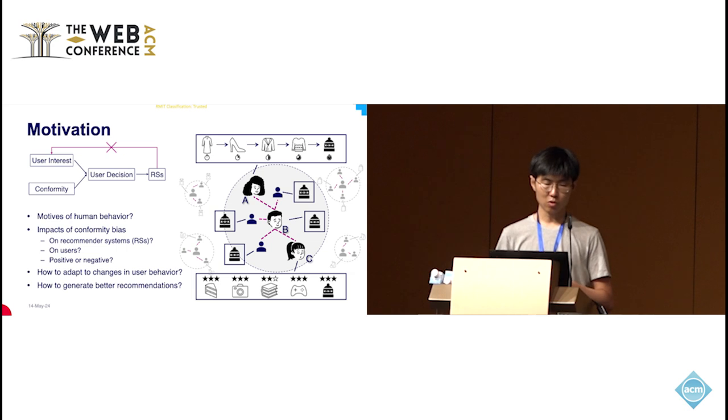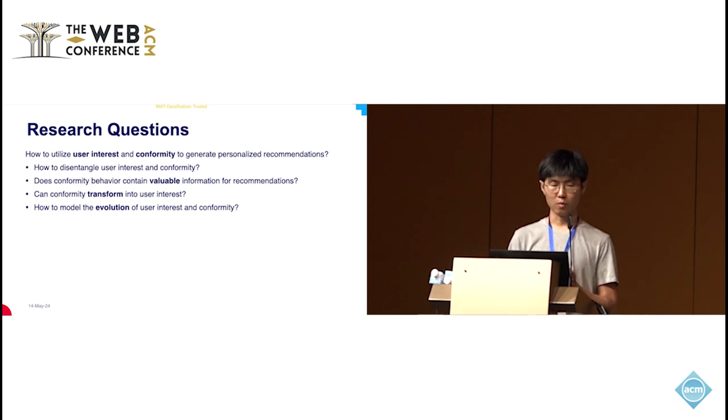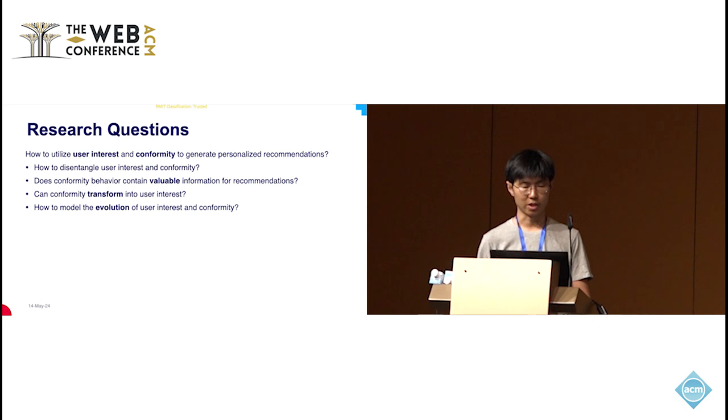From this example, we wonder what factors can influence users' behavior, and what's the impact of conformity bias on recommender systems. We believe conformity behavior contains positive or valuable information that can help recommender systems generate better recommendations. So in our research questions, we wonder how to disentangle users' interest and conformity in their interaction sequence. We treat this problem in a dynamic way and wonder how conformity can transform into users' interest, and how to model this evolution.